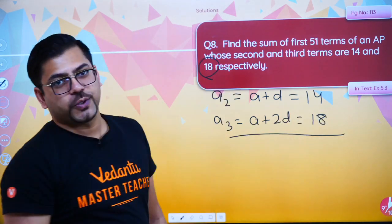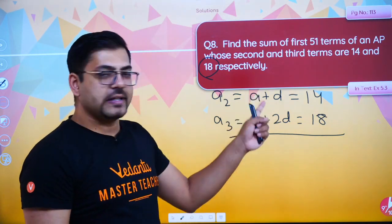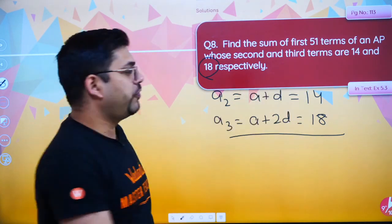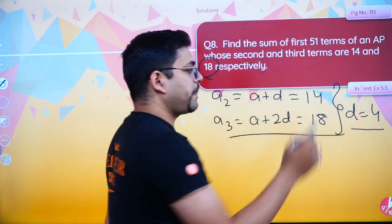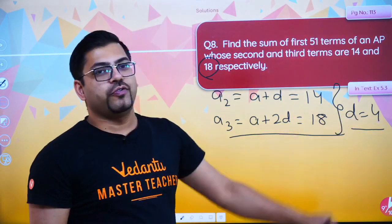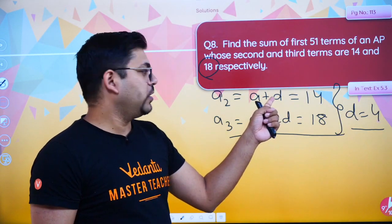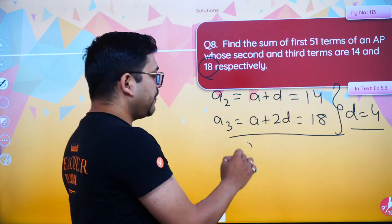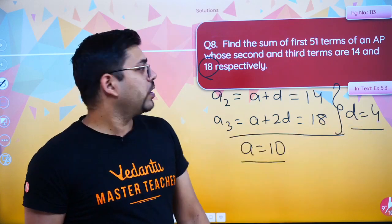You now have two equations and two unknowns. Subtracting the first from the second: A cancels, and 2D minus D gives D = 18 − 14 = 4. So D value is 4. Then substituting back: A + 4 = 14, so A value is 10. You now have A = 10 and D = 4.